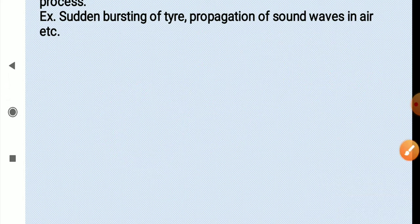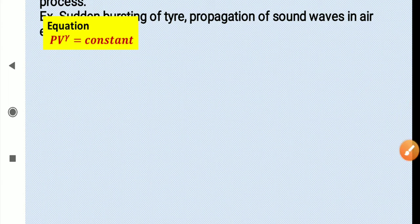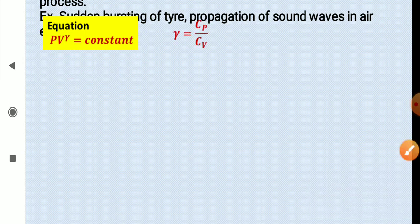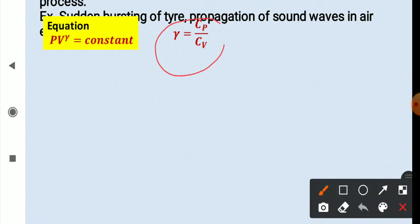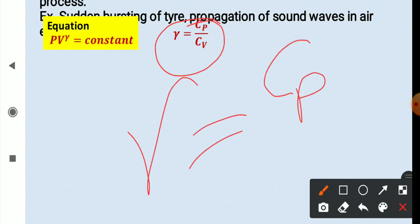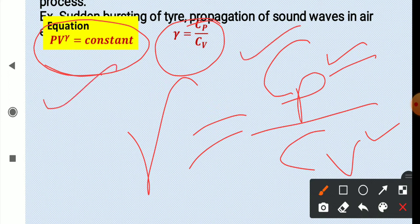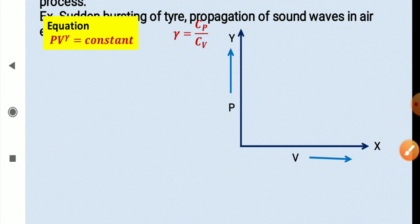The equation of the adiabatic process is PV^γ = constant, where γ is the ratio of molar specific heats: γ = Cₚ/Cᵥ — the molar specific heat at constant pressure divided by the molar specific heat at constant volume. These are two very important relations to remember.